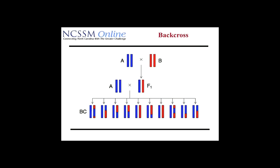What we're going to do now is crossbreed that F1 mouse back with the mom — and that's called a backcross. We get a whole series of the next generation of mice, and we call these backcross mice. You see they are all combinations of blues and reds. We've developed genetic diversity in the mice that we're able to study, and now we can start looking at some of the genetics of these backcross mice and hopefully find interesting characteristics that have some impact on how we understand human disease or human metabolism.